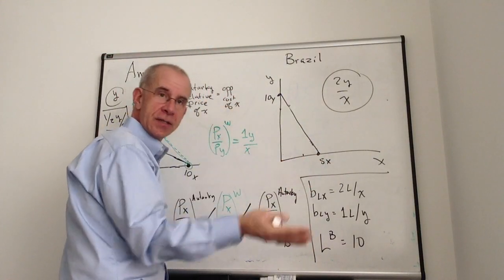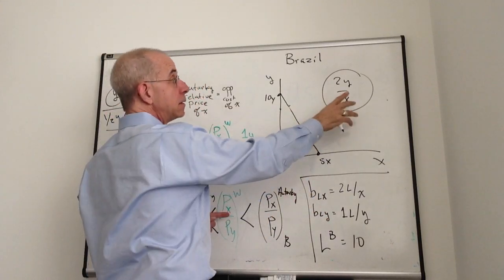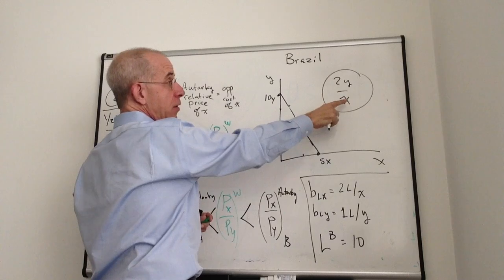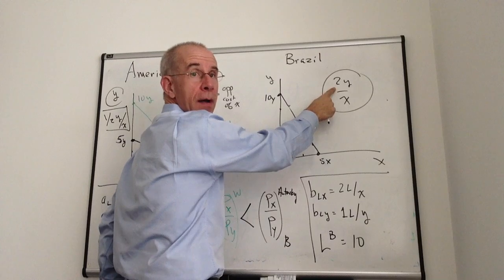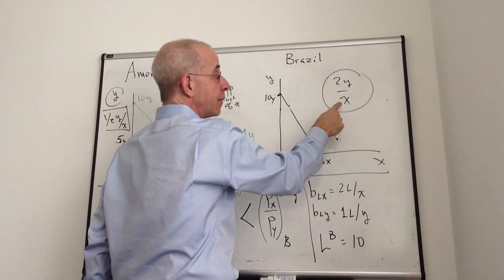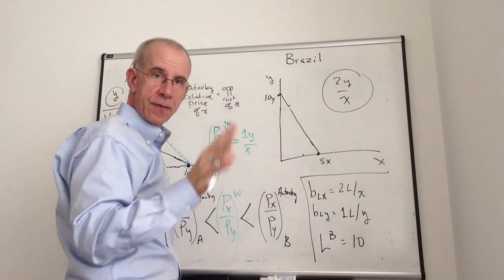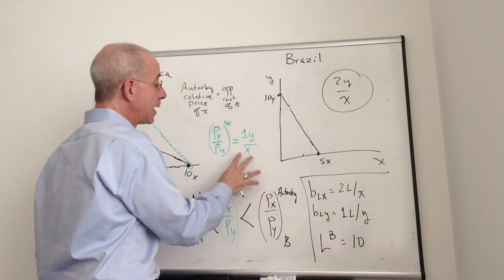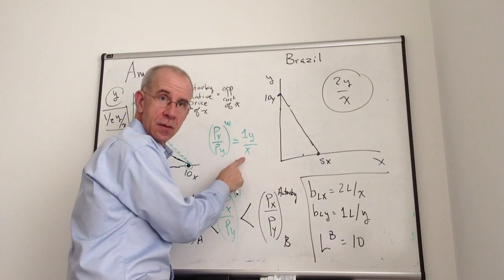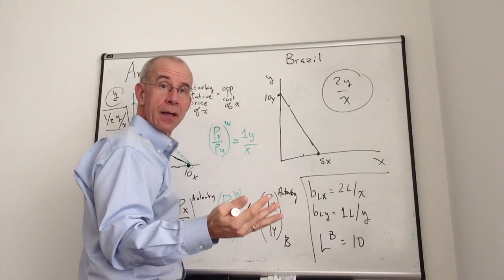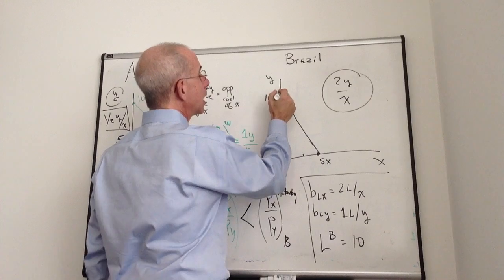For country B, it's just the opposite calculation. For them, if they sell internally, a firm in Brazil would have to sell two units of Y to get enough money to buy one X. That's the prices reflecting the opportunity cost. Internationally, they only have to sell one unit of Y to get a unit of X. So they can get a better deal for Y in the international market than they can get domestically.